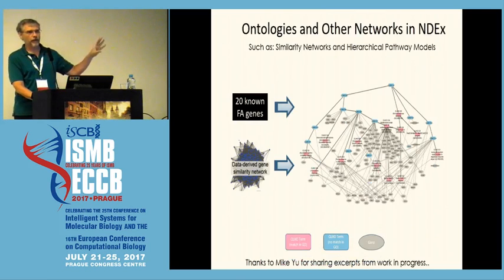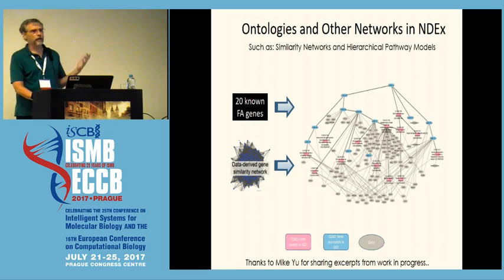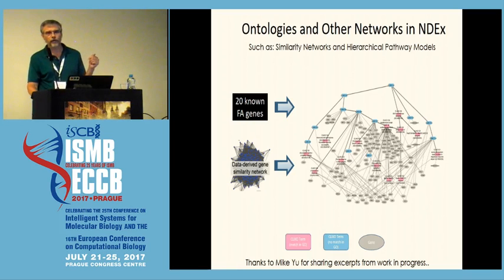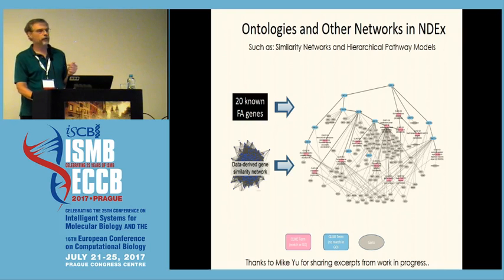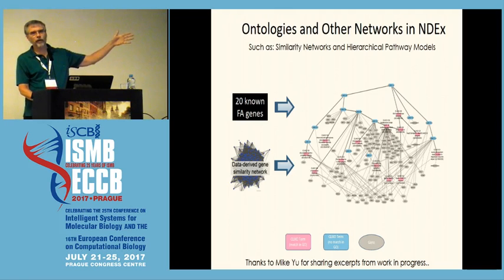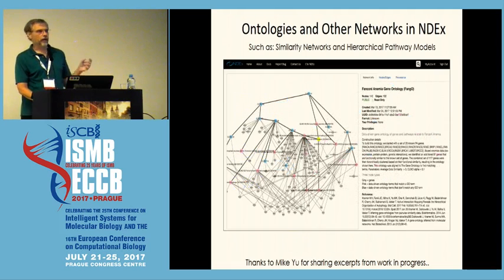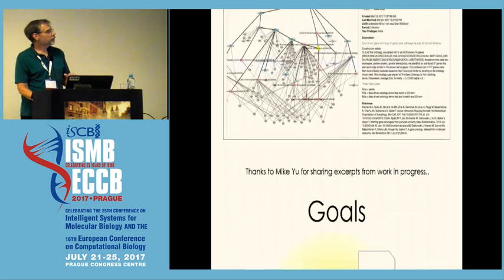When we say every kind of network, we really mean every kind. People often think we mean pathways or molecular mechanisms, but no — any kind of network. Here's one from the Ideker Lab: a pipeline that derives an ontology from gene similarity data. Mike generously allowed me to quote his unpublished work — an ontology of Fanconi anemia — and here's that network in NDEx. Any kind of network, as long as it has nodes and edges.